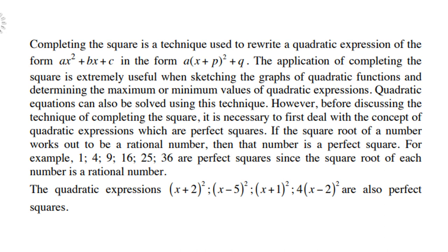So the quadratic expressions x plus 2 squared, x minus 5 squared, x plus 1 squared, 4 times x minus 2 squared are also perfect squares.